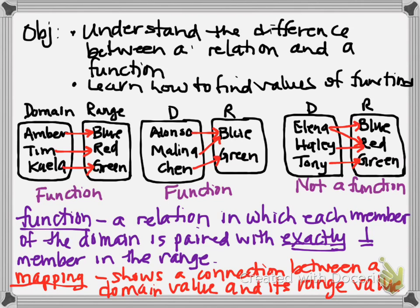So that's part of what you're going to do is you're going to be looking at information, you're going to create a mapping of it and you're going to determine whether you have just a relation or you have a function. So the key thing with a function is that each member of the domain has exactly one number it's paired with in the range. Everybody good with that?